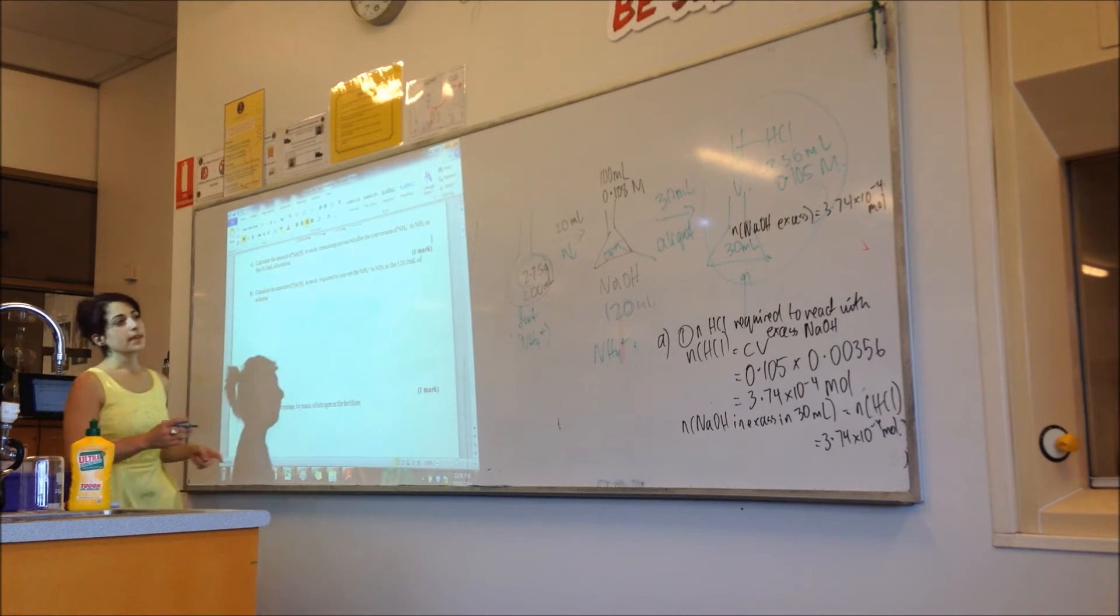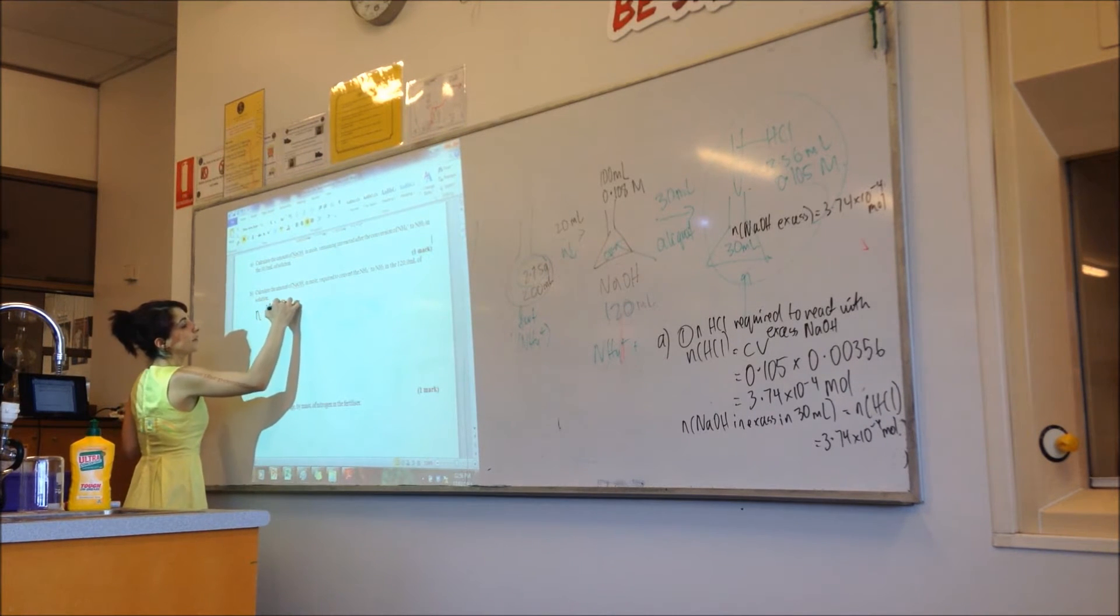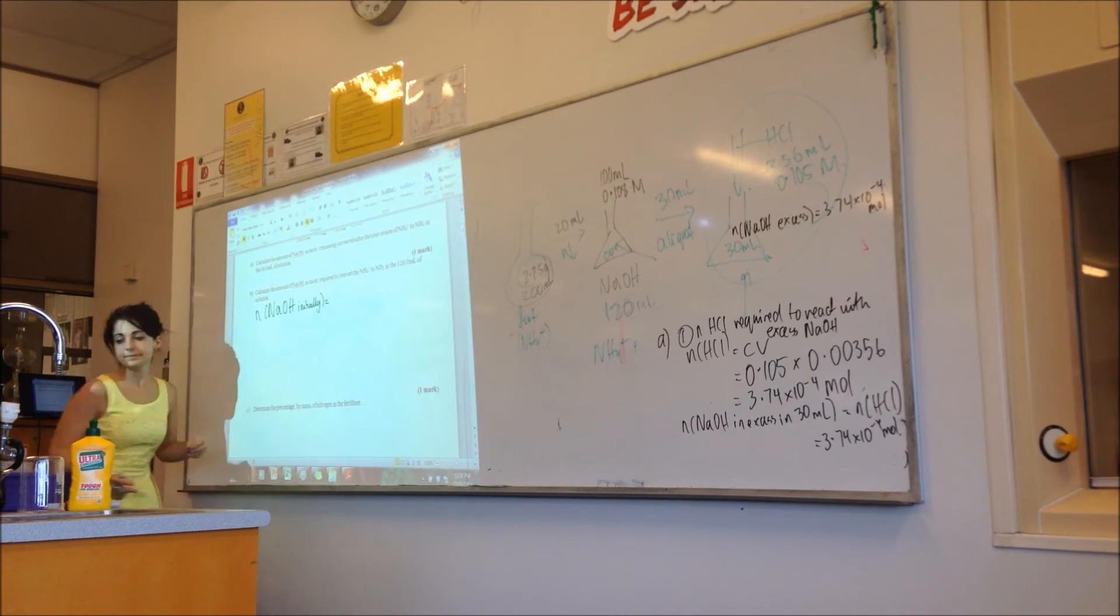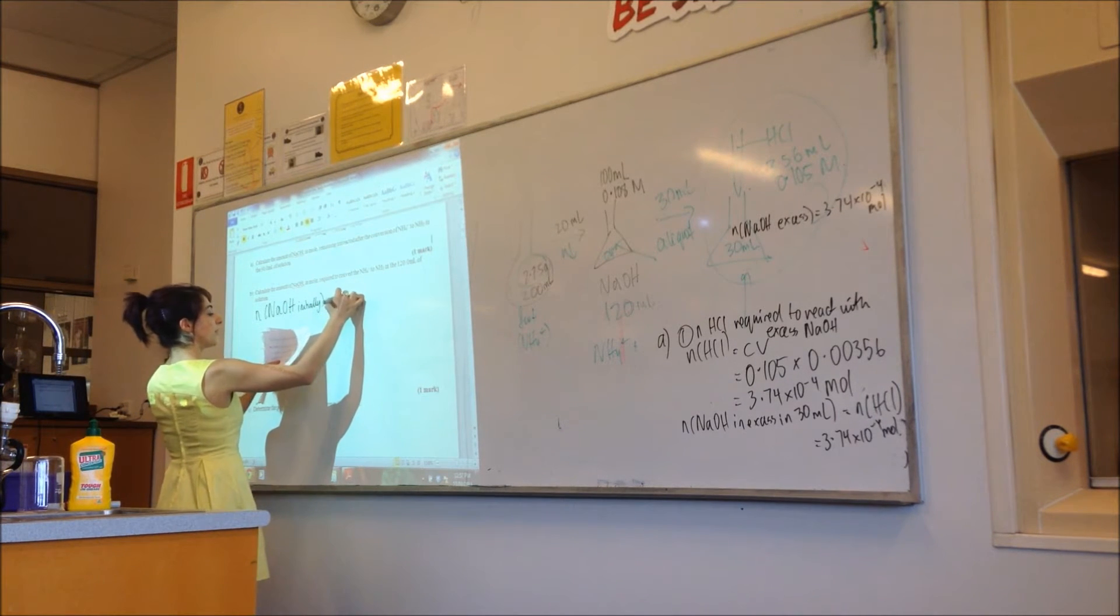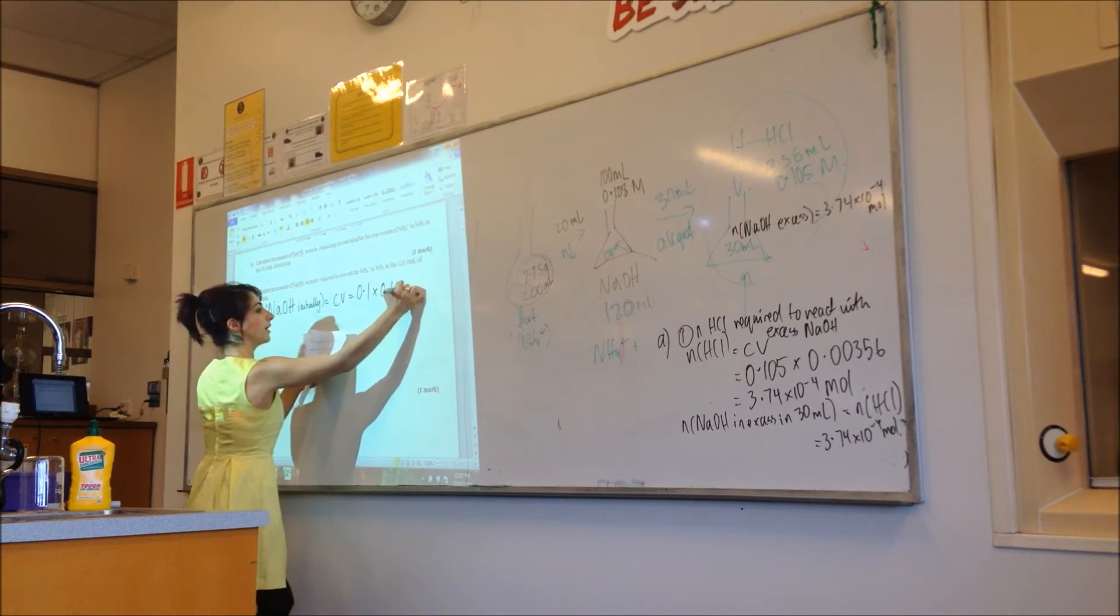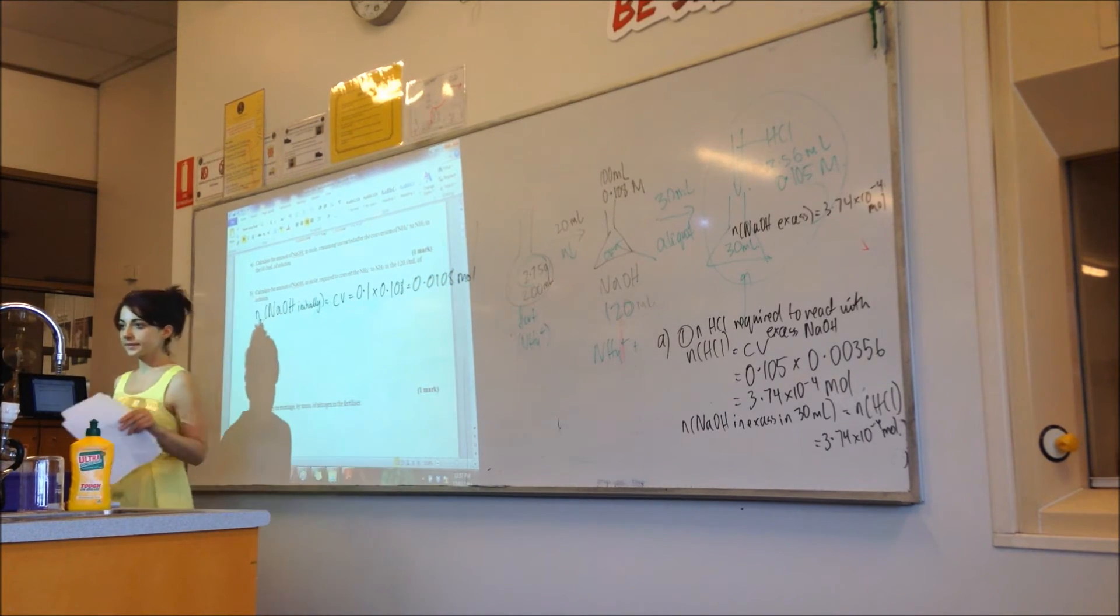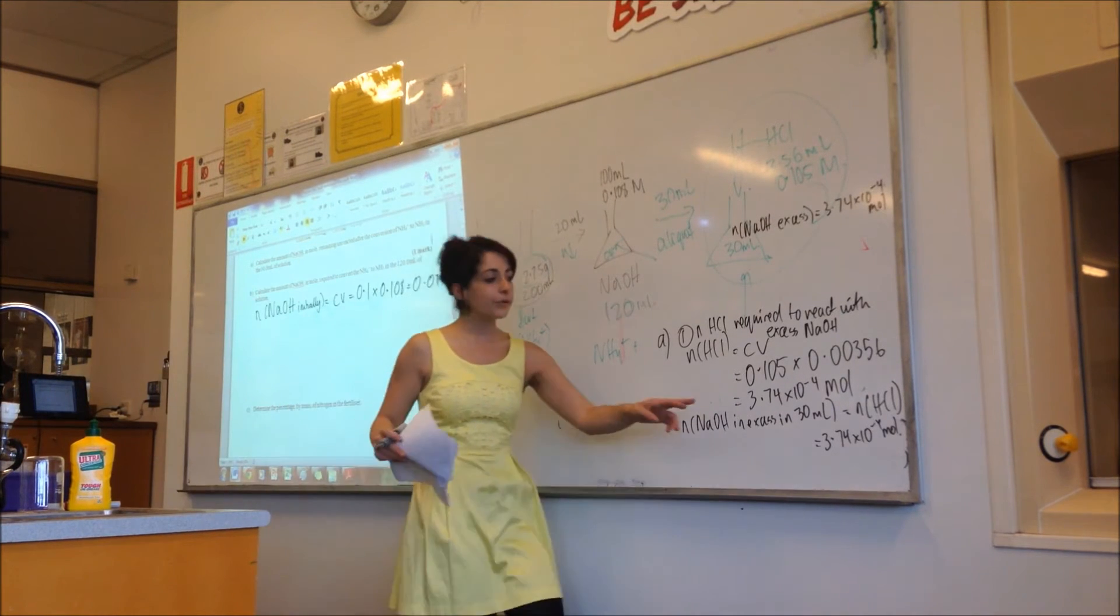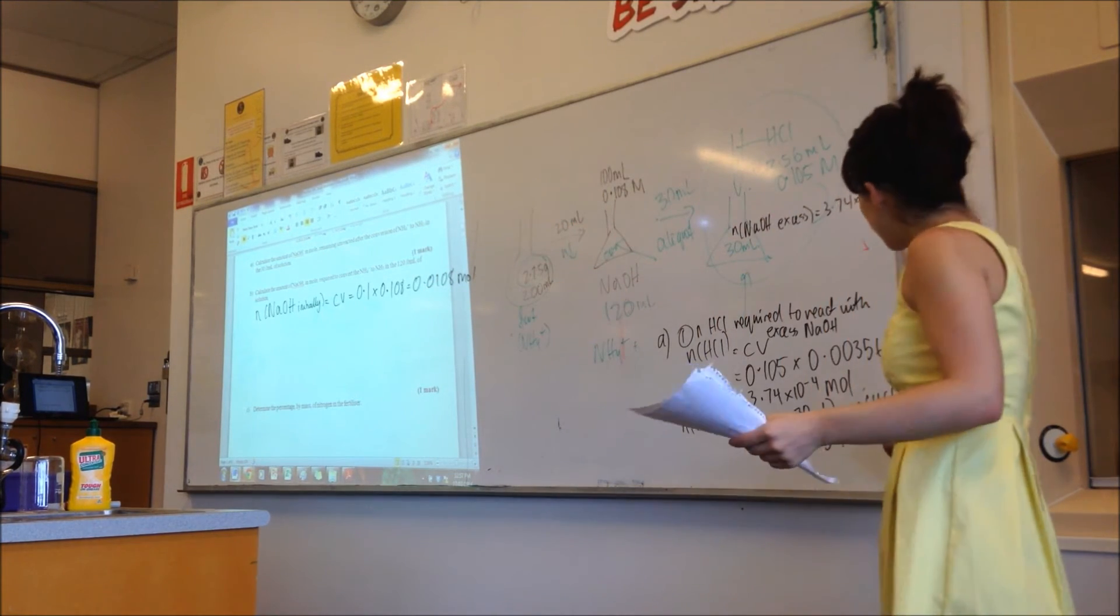In here, how many moles did we put originally? Initially. Excellent. So, CV equals 0.1 times 0.108 equals 0.0108. Happy with that? Now, can I just do the moles of this, the moles of that initially minus the moles in excess?